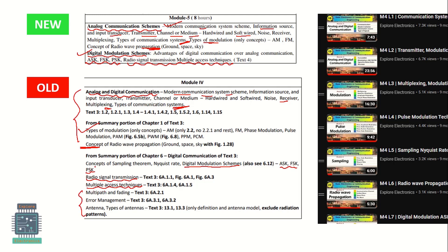A few concepts are left out in the new syllabus. Looking at the existing videos on communication systems - transmitter, modulation, multiplexing, and different types of multiplexing techniques - these are not in the new syllabus. Radio wave propagation and digital modulation schemes ASK and FSK are covered. In the new syllabus this is Module 5, whereas in the previous syllabus it was Module 4.